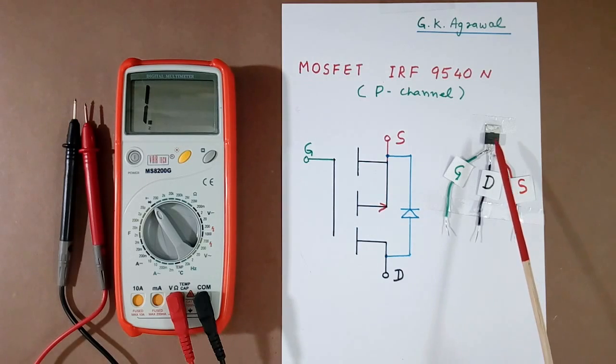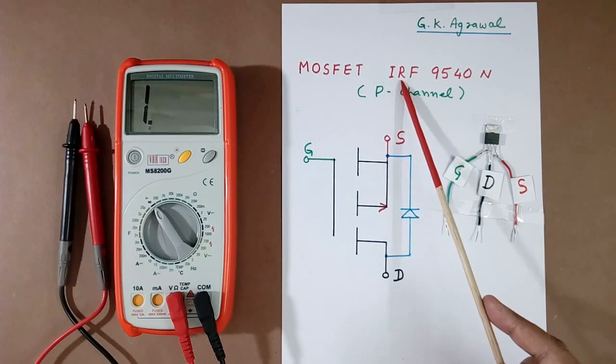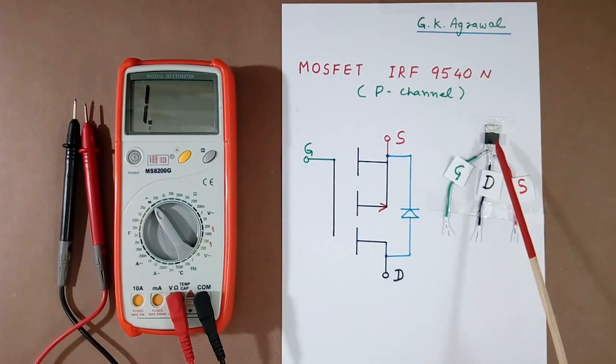I have one MOSFET, P channel, type number is IRF9540N. MOSFET has three terminals: source, gate, and drain.